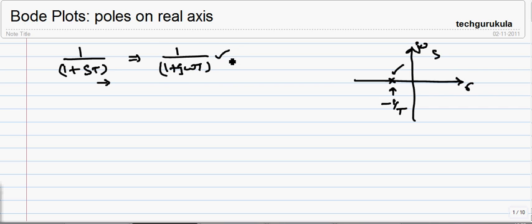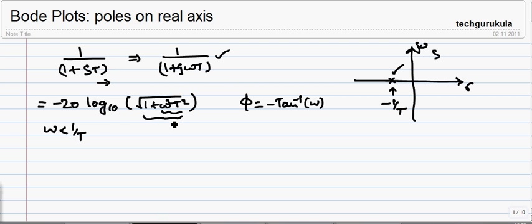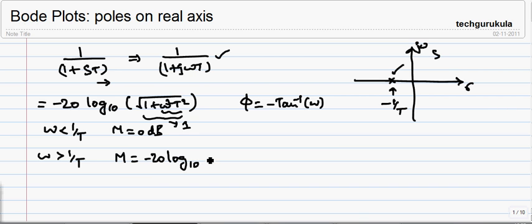If you write the magnitude and phase angle form, the magnitude in dB will be minus 20 log base 10 of square root of 1 plus omega squared T squared. When omega is less than 1 by T, the omega T term will be less than 1, and omega T whole square will be less than 1. In that case we can take this term to be 1, so M will be 0 dB. When omega is greater than 1 by T, omega squared T squared will be very, very greater than 1, so we can take M to be minus 20 log base 10 of omega T.